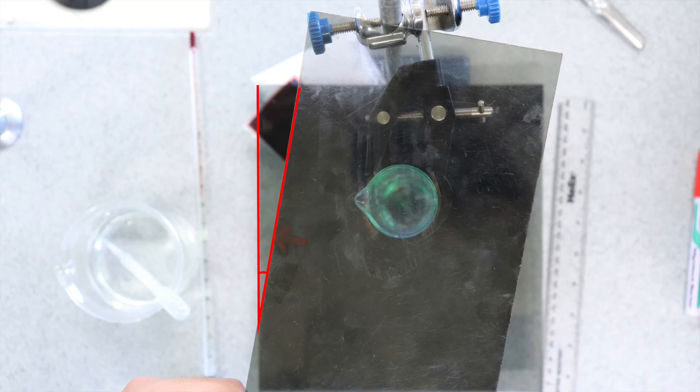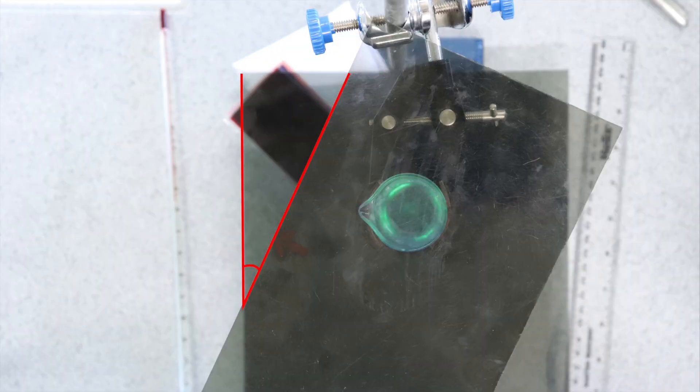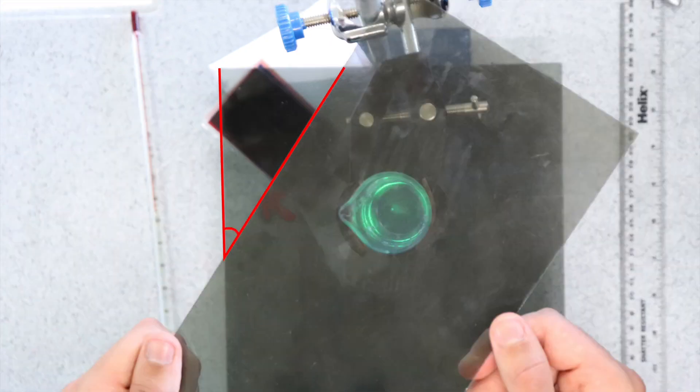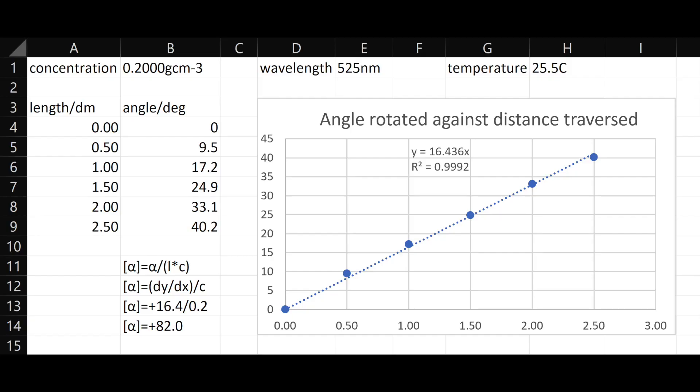We can see the results in these images. As more solution was added to the cylinder, we had a proportional increase in the rotation of the light. We recorded angles for each length of solution, and plotted the angle against length. The gradient of this, divided by the concentration, gives the specific rotation of glucose at 25.5 degrees Celsius, and with wavelength of 525 nanometers, to be plus 82 degree cm³ per gram decimeter.